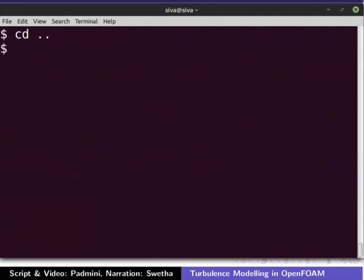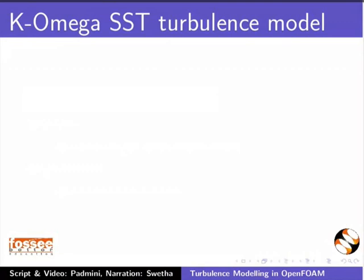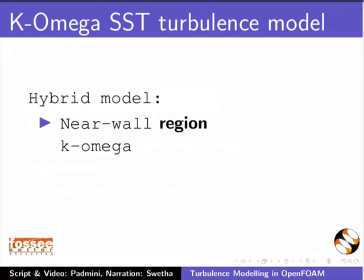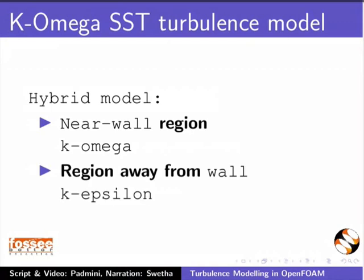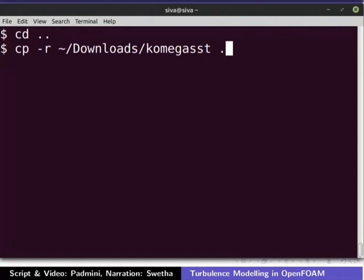Now let's run the same case with the k-omega SST turbulence model. The k-omega SST turbulence model is a hybrid model. In the near-wall region, k-omega SST uses the k-omega turbulence model. In the region away from the wall, it switches to the k-epsilon turbulence model. Please refer to the additional reading material for detail. Download the k-omega SST folder provided in the code files link, extract it, and copy the downloaded file into the run directory by typing the following command. Navigate to the k-omega SST directory using the cd command.